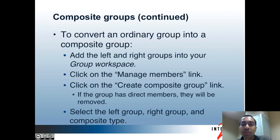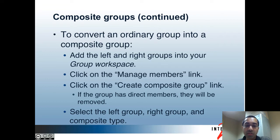To convert an ordinary group into a composite group, here are the steps to follow. First, add the left and right groups into your group workspace. Then click on the manage members link while working on a group, and click on the create composite group link. If your group has direct members, they will be removed at this time. Then select the left group, the right group, and select the composite type. I'll do a quick demo of this.